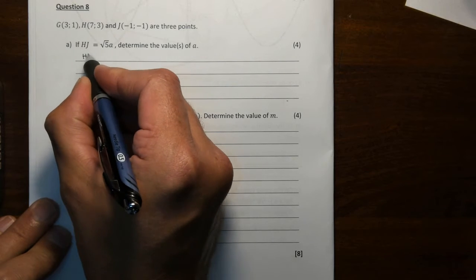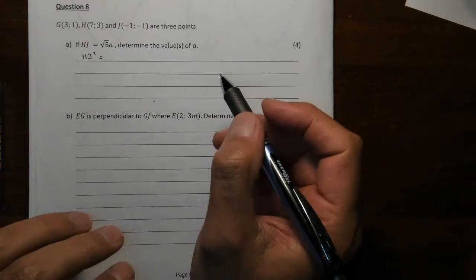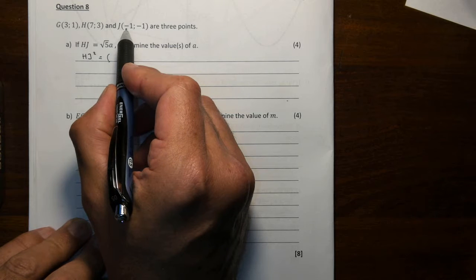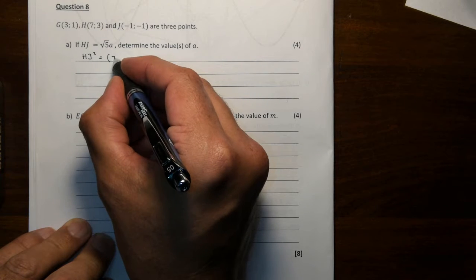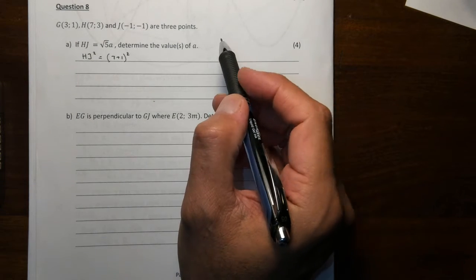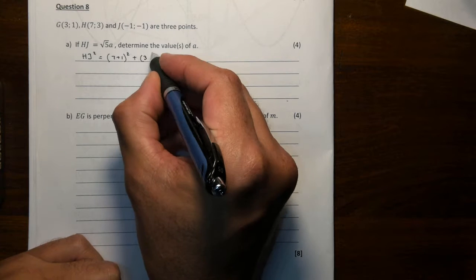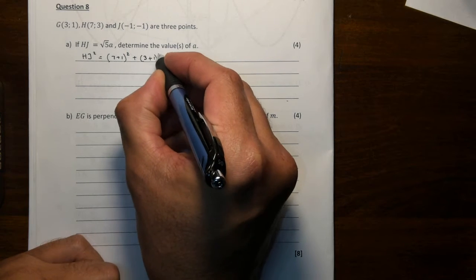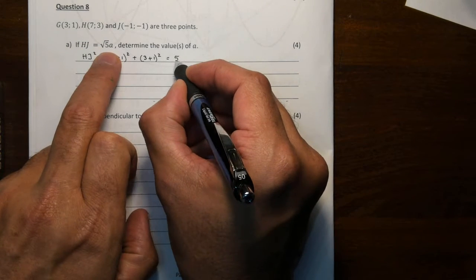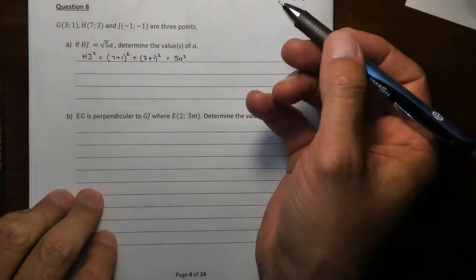They say the distance between H and J is root 5A. They want you to find the value of A. Clearly because you're working with distance, you're going to start with the distance formula. Now let's just square it from the onset, so we don't have to deal with a square root. Between H and J, that distance is 7 minus minus 1, which is 7 plus 1.